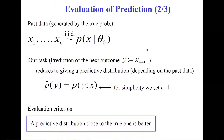Now let's consider our problem in a more abstract way. Past data or observations are generated by the true probability density p of x given theta0. Our task — prediction of the next outcome — reduces to constructing a predictive distribution p-hat of y, where y denotes the future outcome. For simplicity, we set n equal to 1. Of course, p-hat of y, the predictive distribution, depends on the past data x.